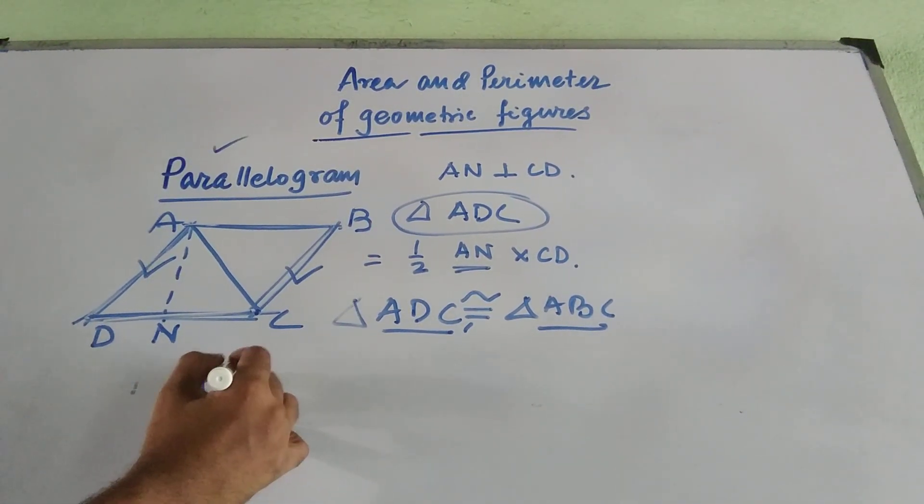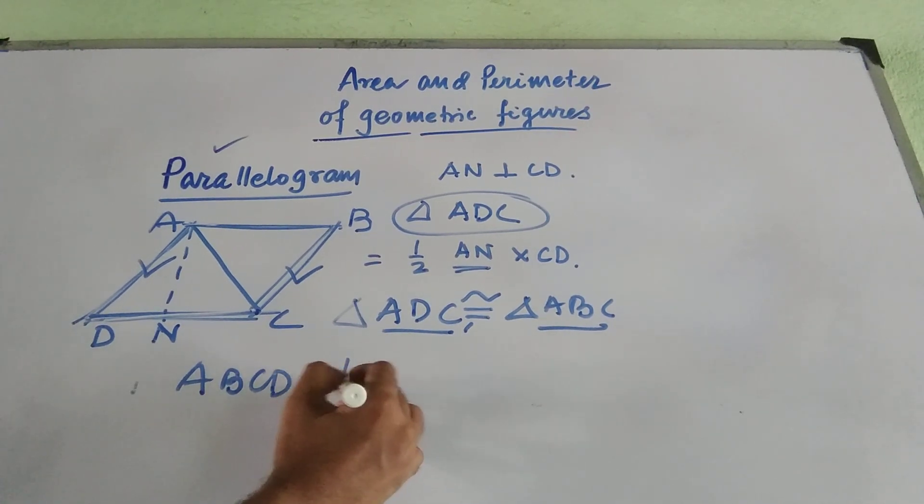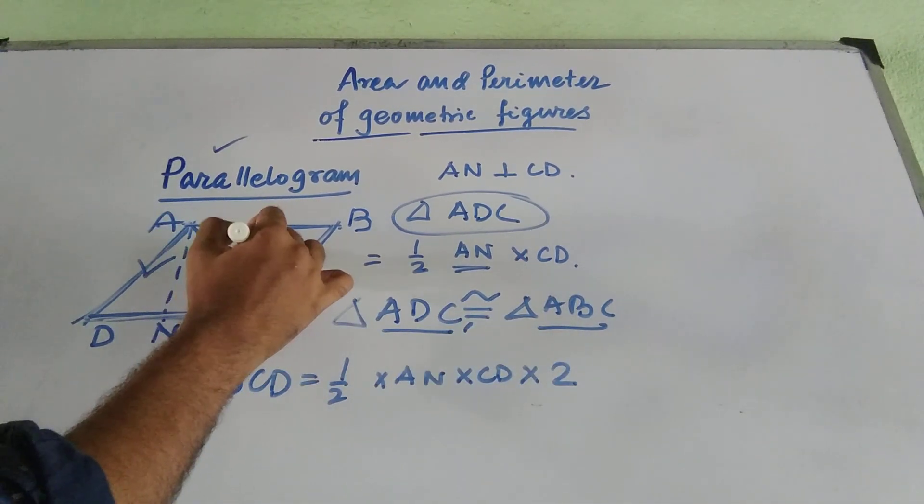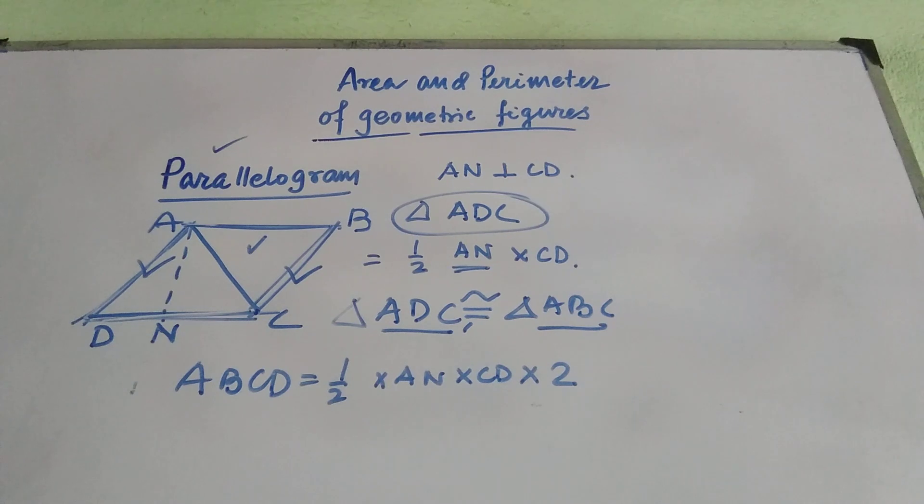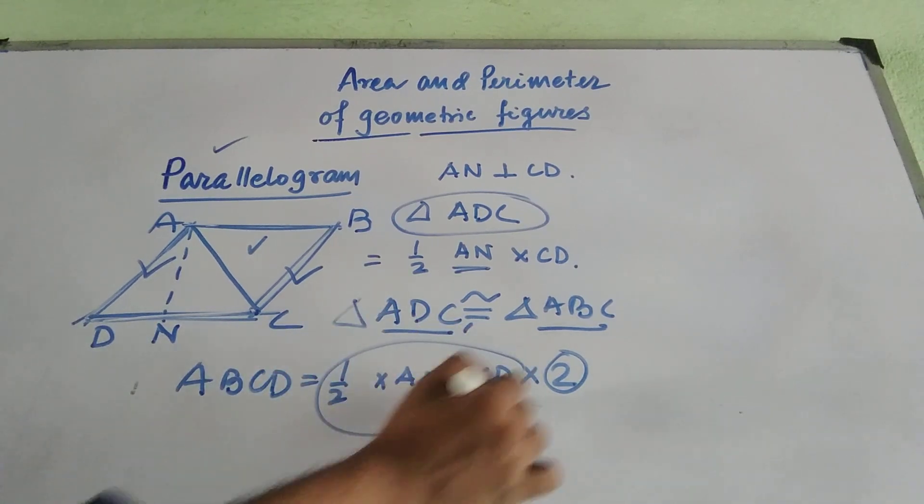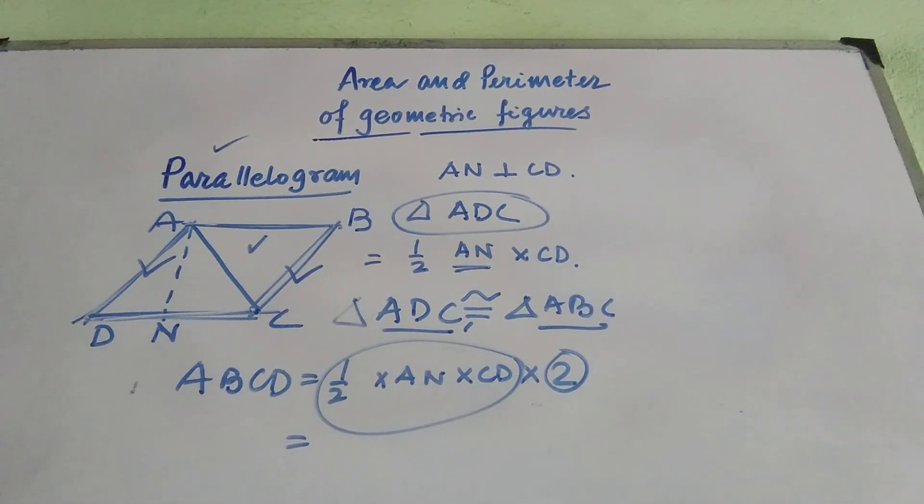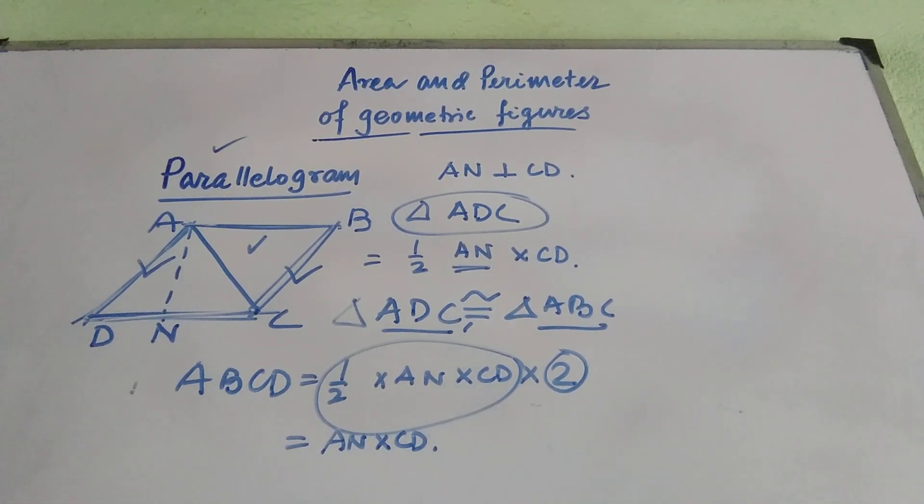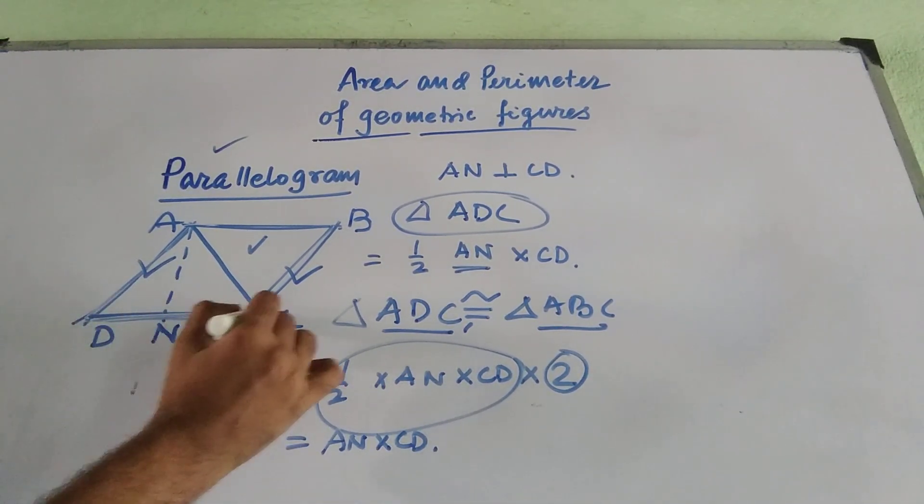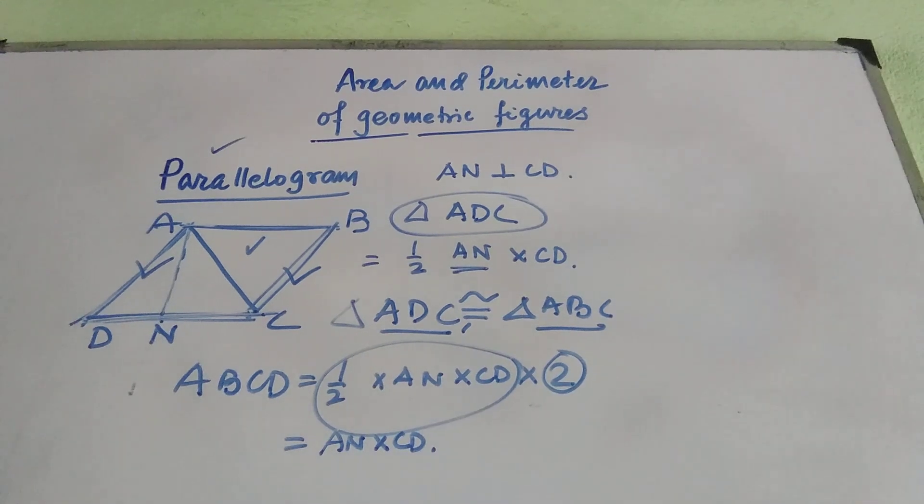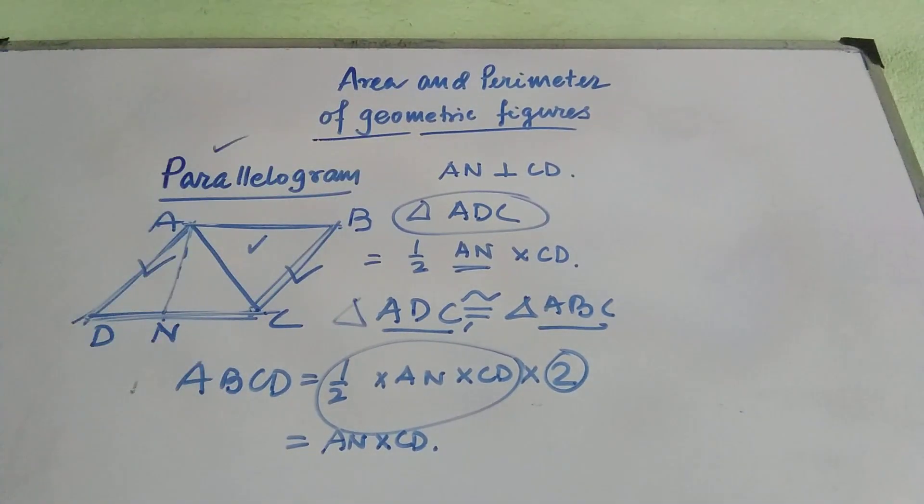So obviously, ABCD, that is the parallelogram, its area will be half into AN into CD into 2. Two means I am calculating the area of ABC, which is nothing but same as ADC. So if I multiply the triangle's area into two, I am getting the area of the particular parallelogram. That means, nothing but AN into CD. So what is the area of the parallelogram? The area of the parallelogram is basically CD into the perpendicular length drawn from the opposite vertex. So that is very simple and how we have derived the area of this parallelogram.